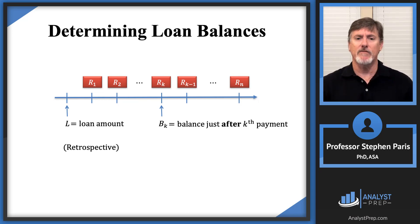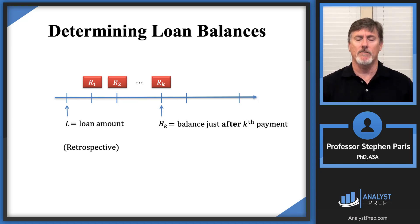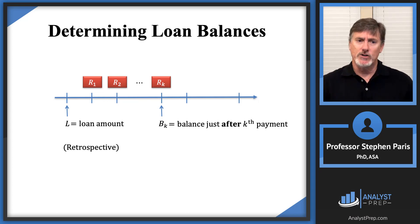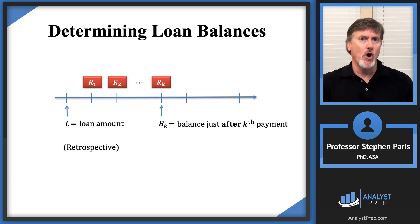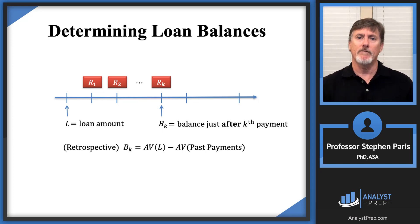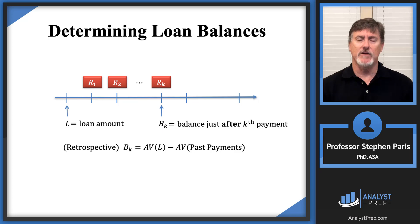So since B sub K is the balance just after the Kth payment, I'm not worried about the payments that come after that. The retrospective calculation to find the balance at time K, B sub K, is to first take the loan amount and accumulate that to time K. That's what you would owe if you had made no payments on the loan. But you have made payments, so you need to subtract from that amount the accumulated value of the payments that you have made. This is the retrospective definition of the balance just after the Kth payment.